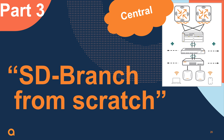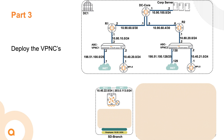Welcome back to the third video of the SD branch from scratch video series. In the last video we configured the branch gateway group and 9004 gateway. Now that this device is all up and running, we'll start with the onboarding of the two VPN concentrators. This video will contain the same steps as taken in the last video, but for the completeness of the SD branch from scratch series, this video is also included.